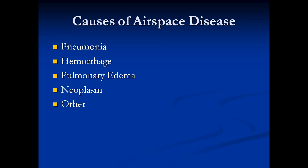What are the causes of airspace disease? There are several. First, there's pneumonia — a lobar pneumonia in particular will cause airspace disease. Hemorrhage into those little airspaces will cause consolidation. Pulmonary edema can be interstitial or airspace, and when it becomes severe it causes airspace disease. Finally, there are certain neoplasms which cause airspace disease as well, and a few other idiopathic conditions.